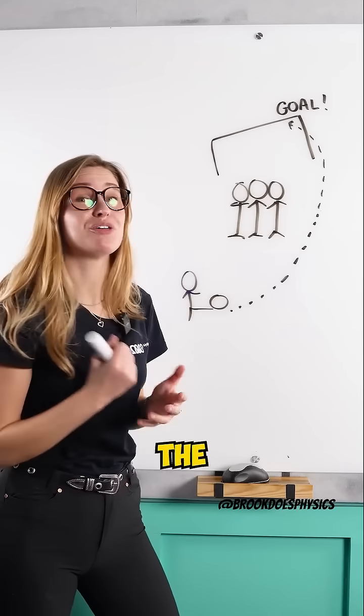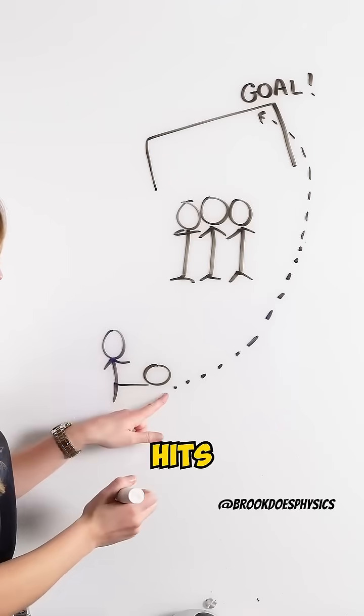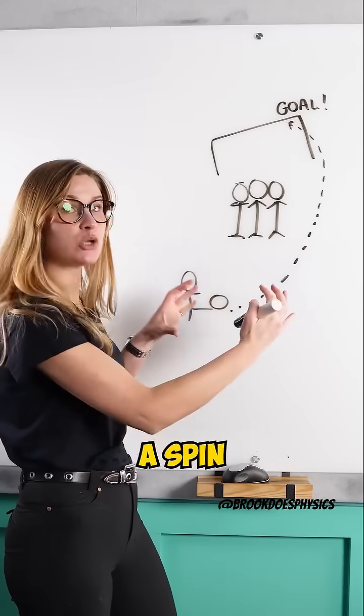This curved motion of the ball is called the Magnus effect. So how it works is when a football player hits the edge of the ball, he causes a spin on the ball.